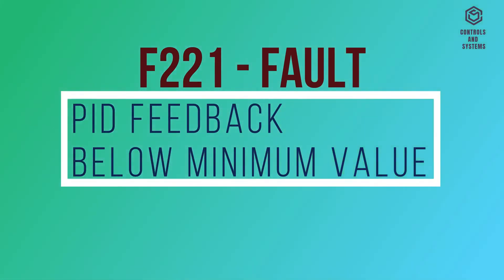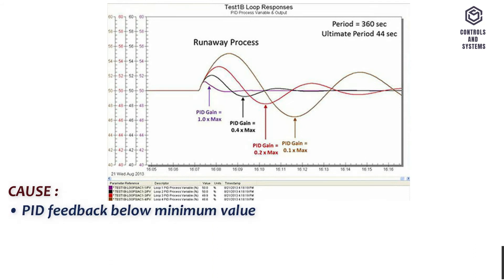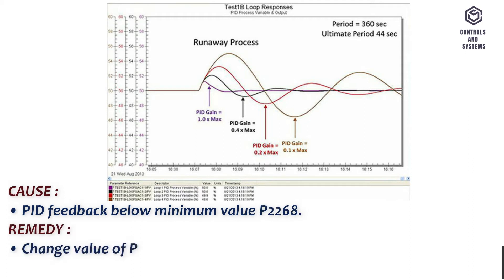F221 Fault: PID feedback below minimum value. Cause: PID feedback below minimum value P2268. Remedy: change value of P2268.